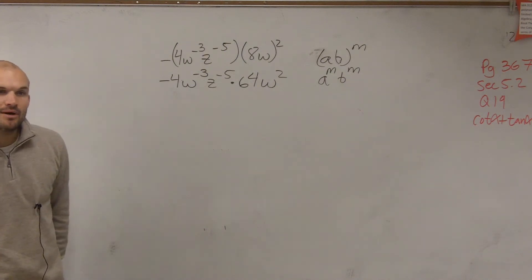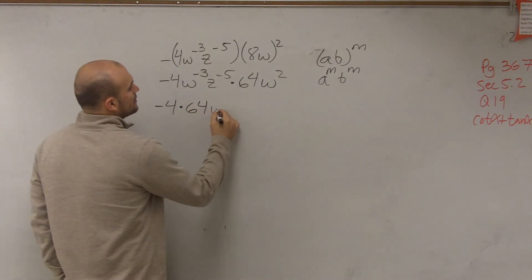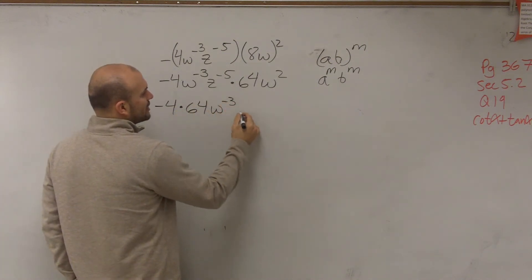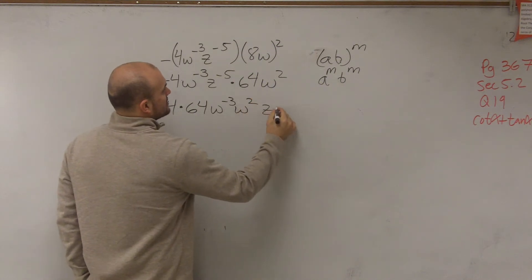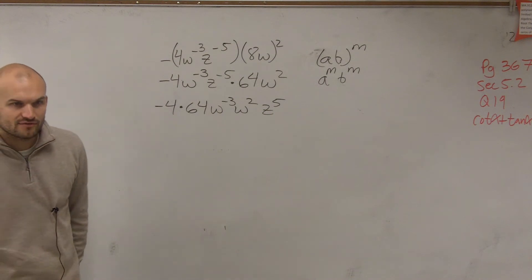Now let's multiply our like terms. So we have negative 4 times 64, w to the negative third times w squared, times z to the fifth. So negative 4 times 64 is negative 256.